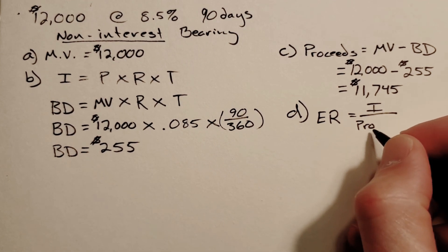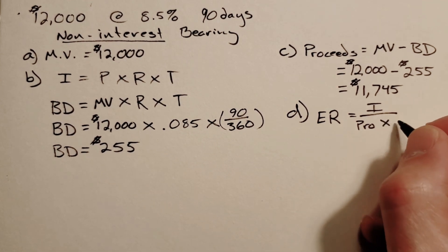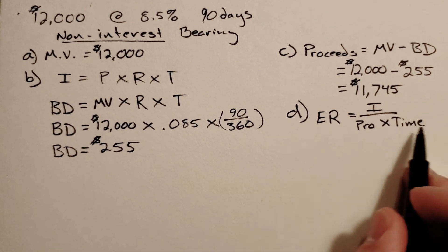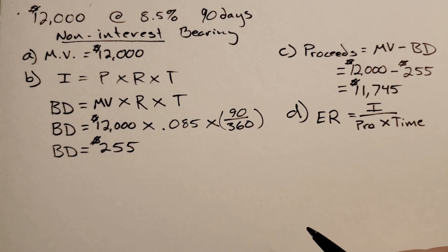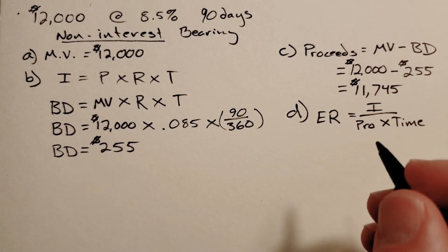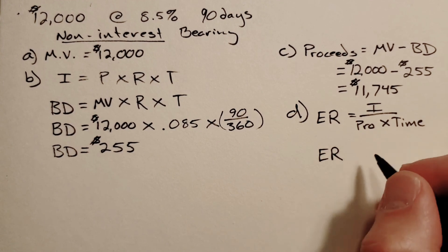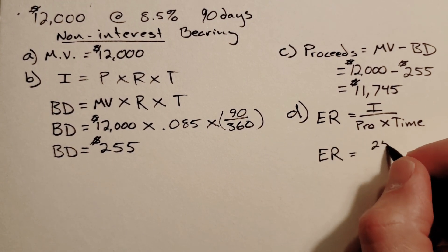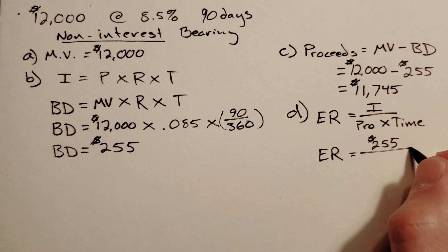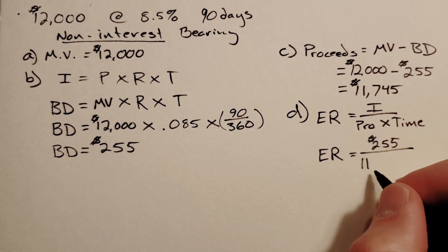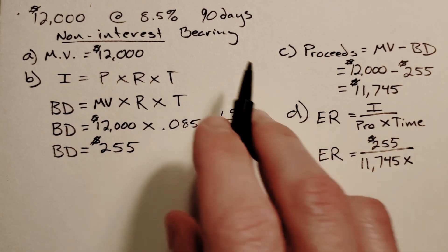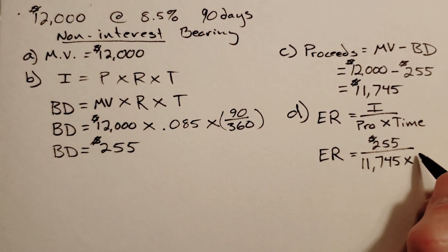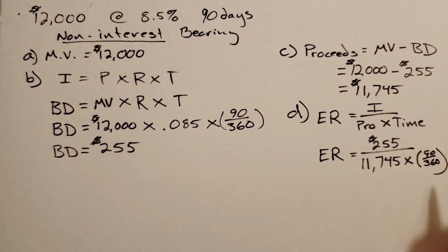I always write 'pro' because we have a P for principal, times our time. This equation can get a little complicated so we need to make sure we put parentheses in here and use parentheses on your calculator as well. Our effective rate will look like this: 255, which is our interest, divided by $11,745 times our time which is 90 days out of 360.